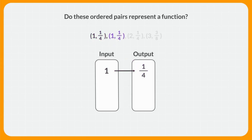Next, we'll move to this point. There's another input of 1, and again an output of 1 fourth. Since this point is the exact same ordered pair, there's no need to add it to our map a second time. But we should notice that the input of 1 still results in the same output of 1 fourth. So at this point, does this map show a function? So far, an input of 1 has just a single output of 1 fourth, so right now the map is showing a function.